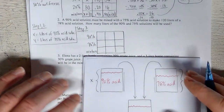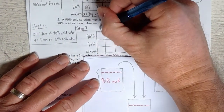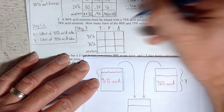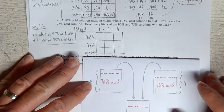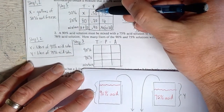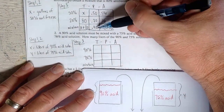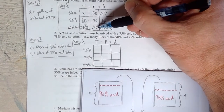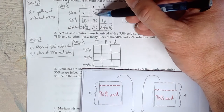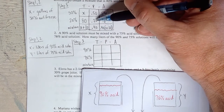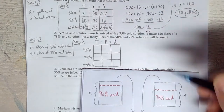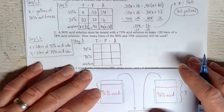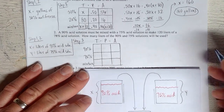Why can't you add down on the second column? Because the mixture percentage is always between the other two percentages — it wouldn't add up correctly. 0.90 plus 0.75 does not equal 0.78. So the add-down rule only applies to the first and third columns.